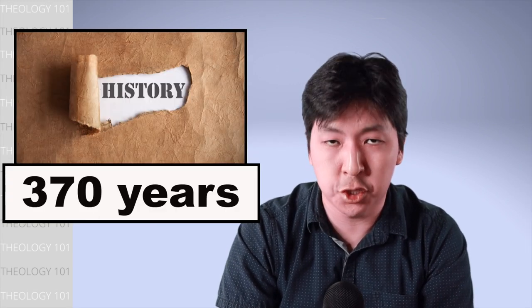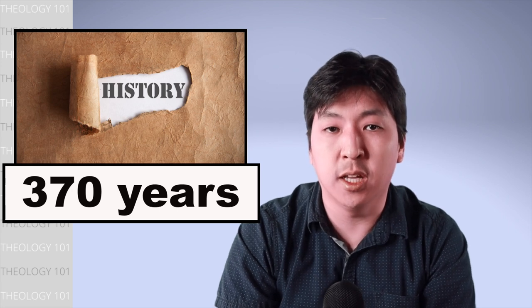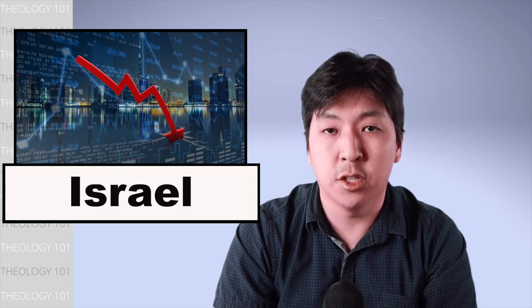The books of 1 and 2 Kings cover about 370 years of history, starting from the end of King David's reign. The message of 1 and 2 Kings is about the decline and fall of the kingdom of Israel ending in judgment.